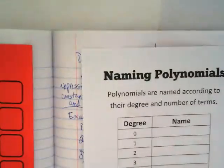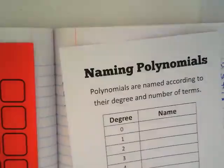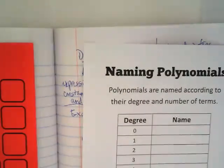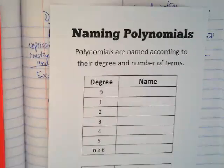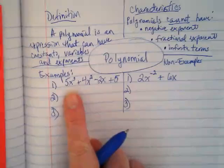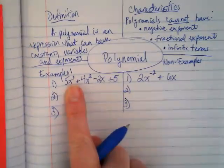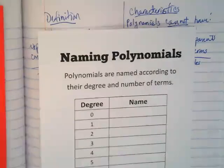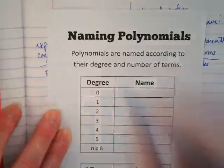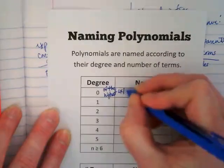Polynomials have special names, and they're named according to their degree and how many terms they have. This example I made for you would be called a cubic polynomial because the highest term is to the third power and it has four terms. So we're going to get the names down and then we'll look at some polynomials. The degree of the highest exponent is what determines this.